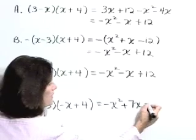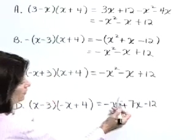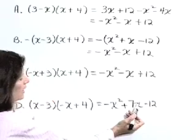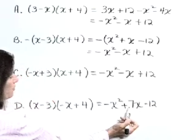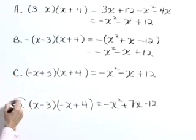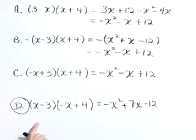Lastly, we get minus 12. Okay, so this one does not work. We get a different product for part d. Your correct answer then is d, as it is not a factored form of negative x squared minus x plus 12.